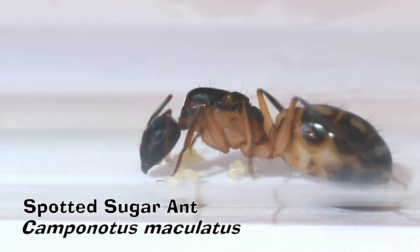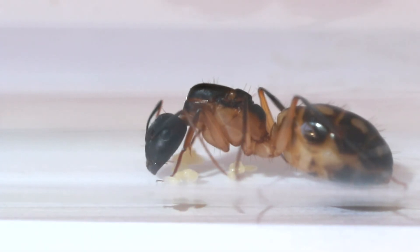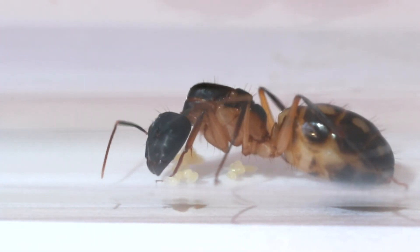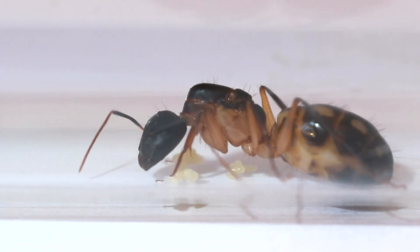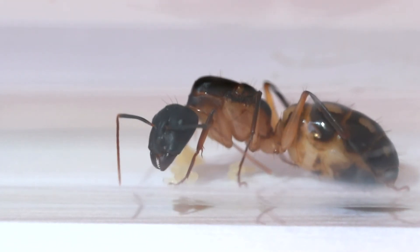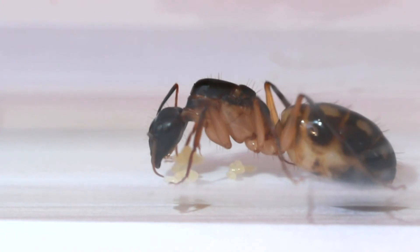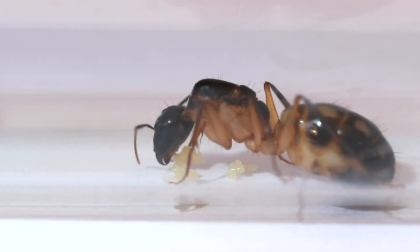Here I have a Camponatus maculatus or the spotted sugar ant queen, which already has a few eggs. Now these eggs just have to hatch out into little larvae and those larvae have to grow into small ants. Then I will successfully have started an ant colony. So I will be keeping you guys up to date as this continues and happens.